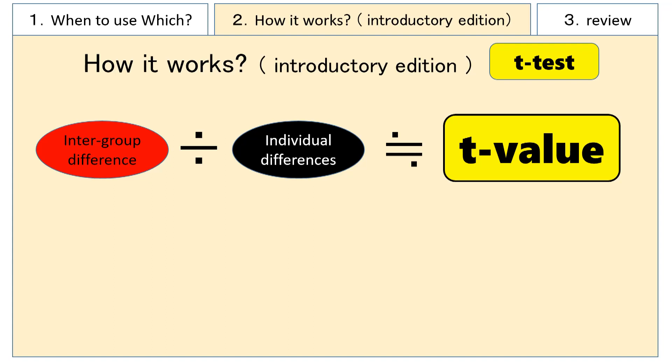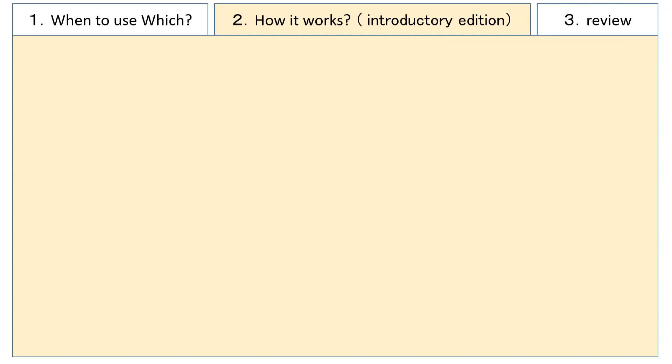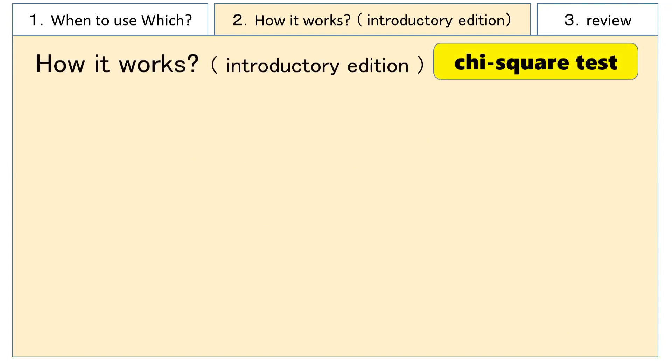In reality, the calculation is a bit more complex, so this explanation is not entirely accurate. However, thinking of the t-value as a value similar to that quotient can give you a rough idea without significant issues. Moreover, ANOVA also follows a similar approach to the t-test for conducting hypothesis testing.